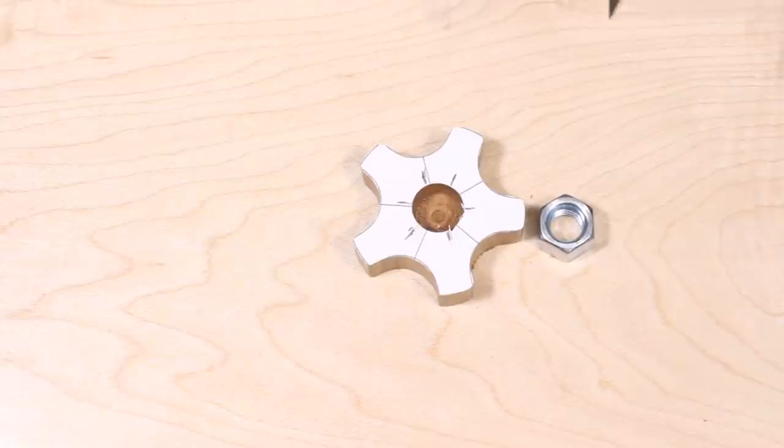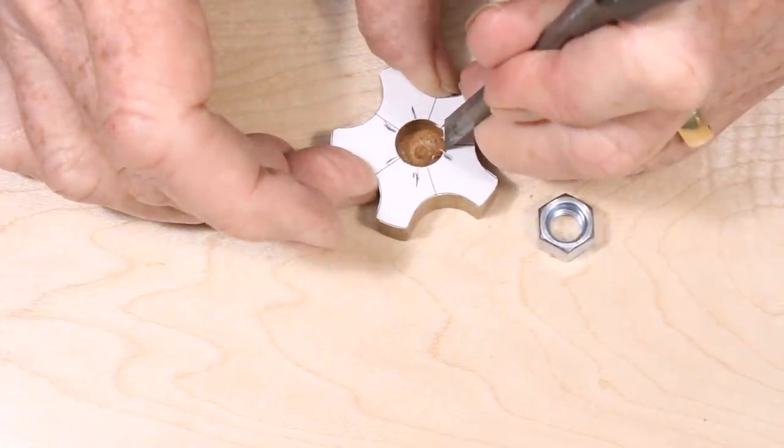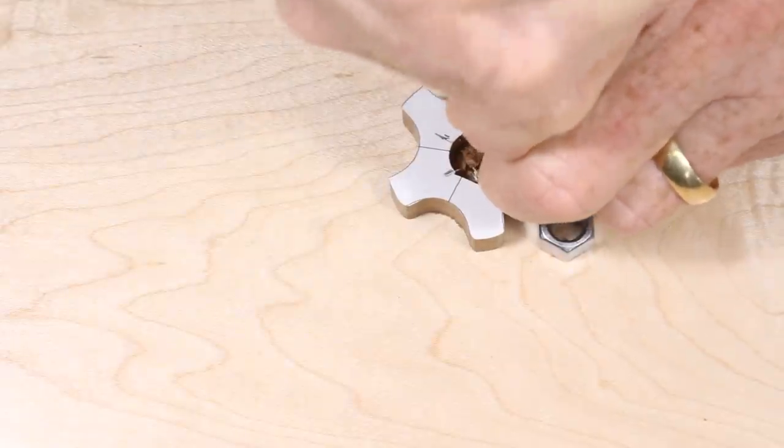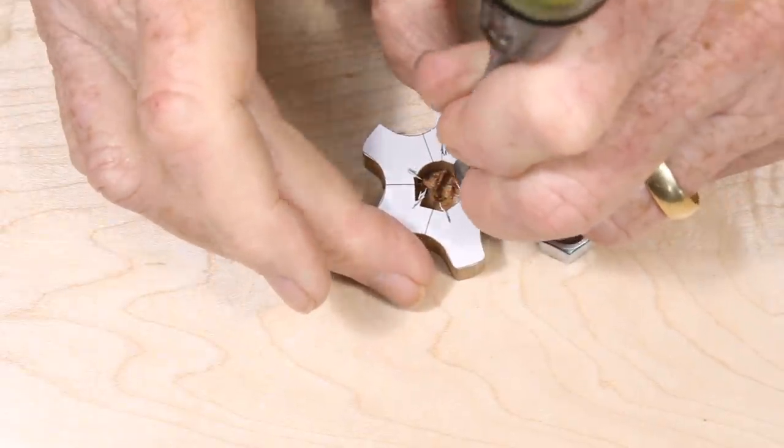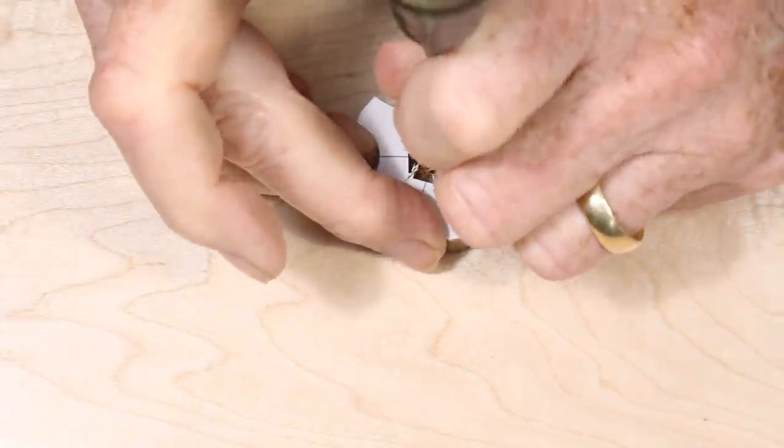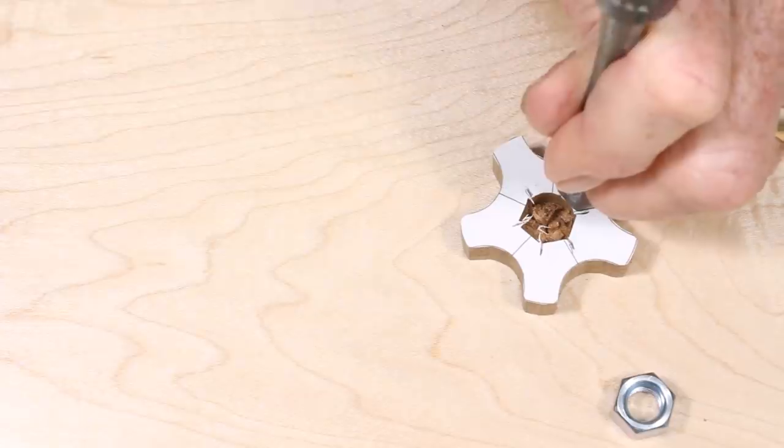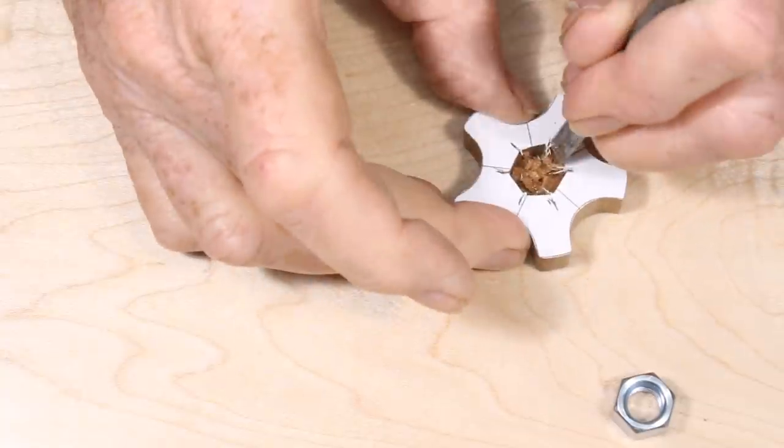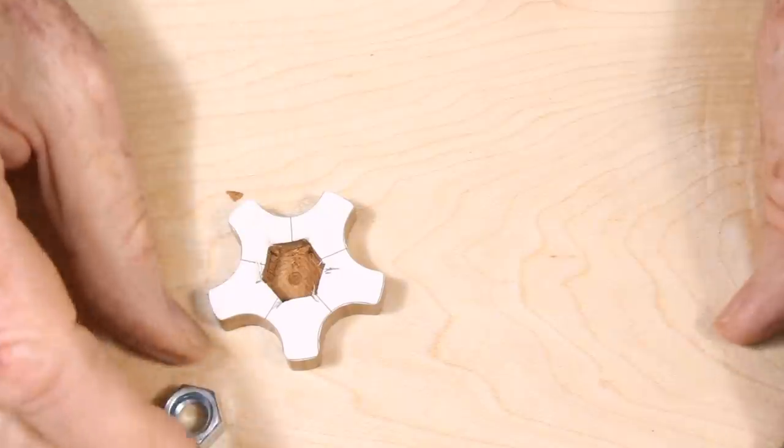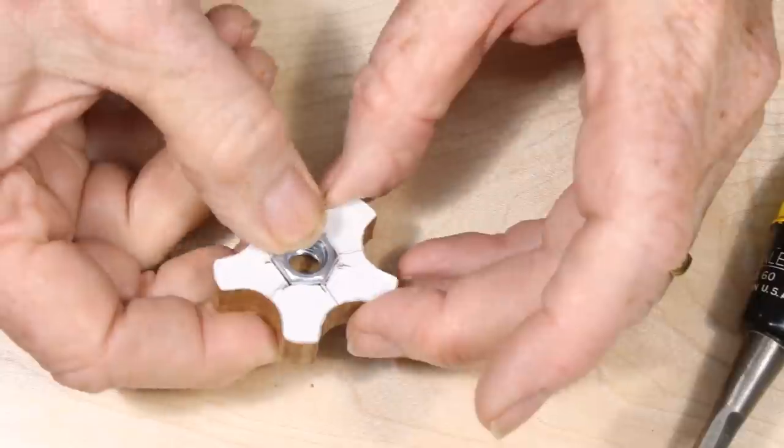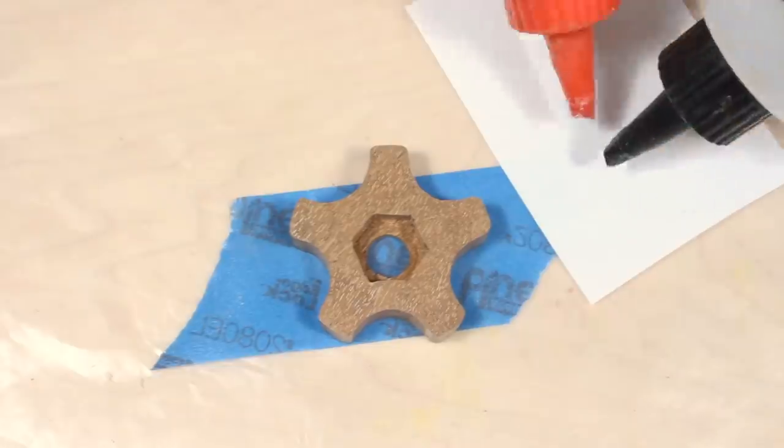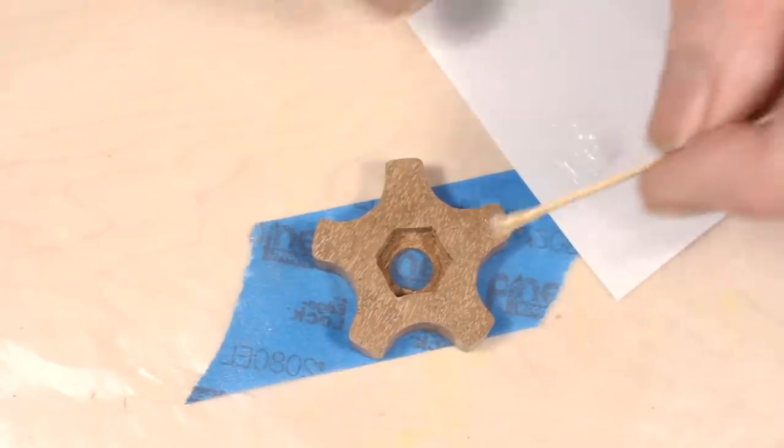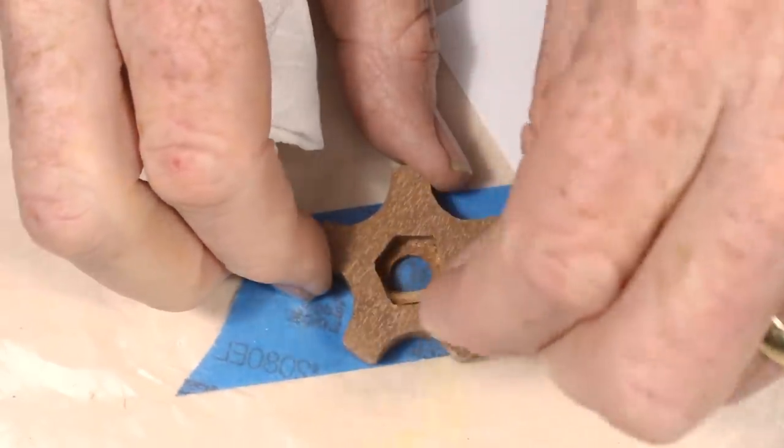For the tailstock locking wheel, I drill the recess a little smaller than the nut and mark the six corners of the nut around the hole. I then cut flat sides that form the corners with a small chisel. It takes only a few minutes and the drill hole helps to ensure that the nut will sit flat. A little epoxy will lock this nut in place.